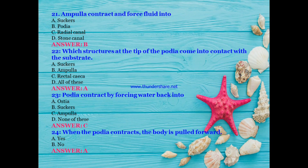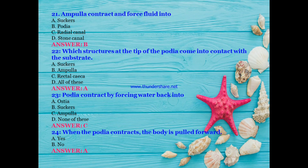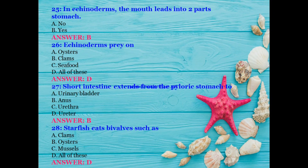Which structures at the tip of the podia come into contact with the substrate — suckers, ampulla, rectal caeca, or all of these? The answer is A — suckers. Podia contract by forcing water back into: suckers, ampulla, or none of these? The answer is C — ampulla. When the podia contracts, is the body pulled forward? Yes — correct.